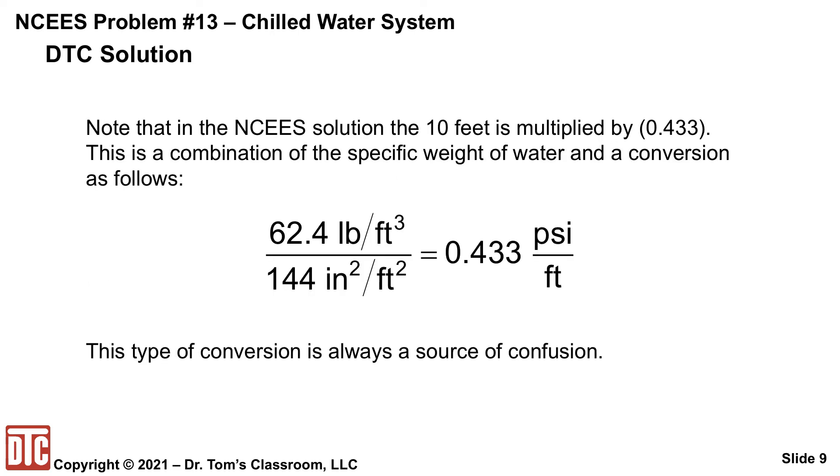Now, there was a term here of 0.433 and you kind of wonder where it was. They took 10 feet and multiplied by it. Well, what it was was the conversion that we just did. The gamma 62.4 divided by the 144 inches squared per foot squared. So you got this 0.433. They didn't give it as any units. It just said 0.433 and a lot of confusion as to what is that.